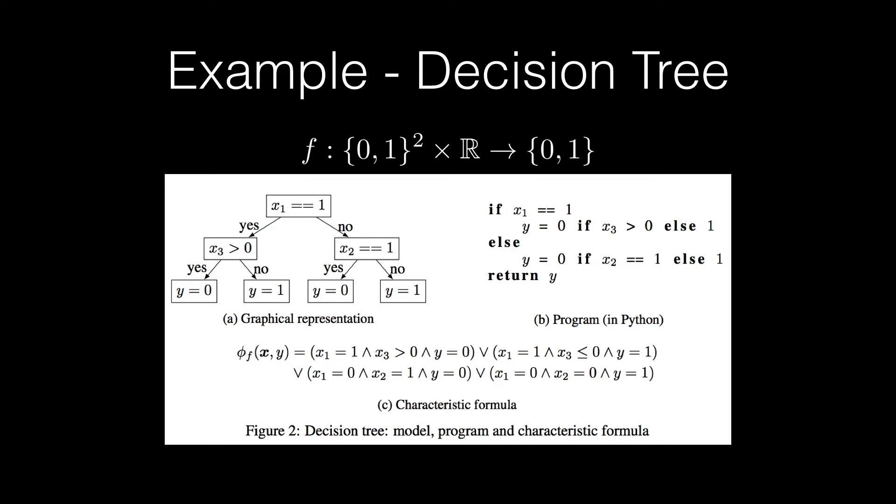To construct a characteristic formula representing the function F(x) = y computed by this tree, we first build a clause for each leaf in the tree by taking the conjunction of all the conditions encountered in the path from the root to the leaf. Then the characteristic formula corresponding to the full tree is obtained by taking the disjunction of all set clauses.